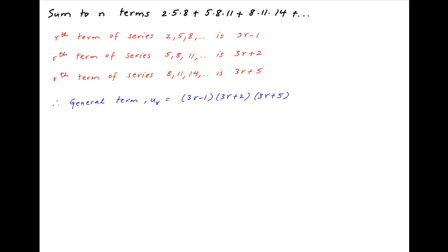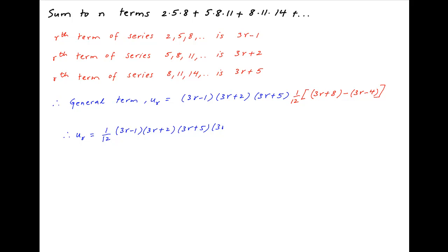Now, multiply this product with the expression (3r plus 8) minus (3r minus 4), which is equal to 12. Therefore, divide by 12 as well. And so, ur can be broken into two components: the first component is 1 upon 12 times (3r minus 1)(3r plus 2)(3r plus 5)(3r plus 8), and the second component is minus 1 upon 12 times (3r minus 4)(3r minus 1)(3r plus 2)(3r plus 5).